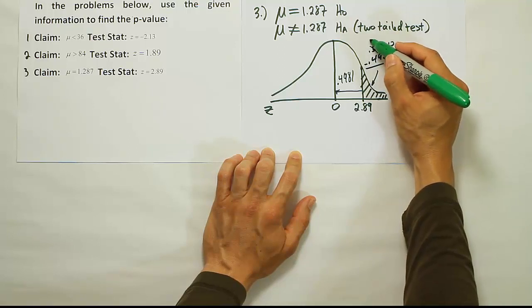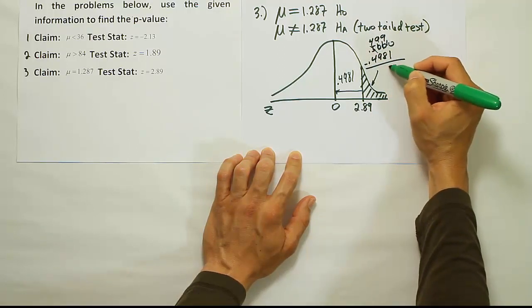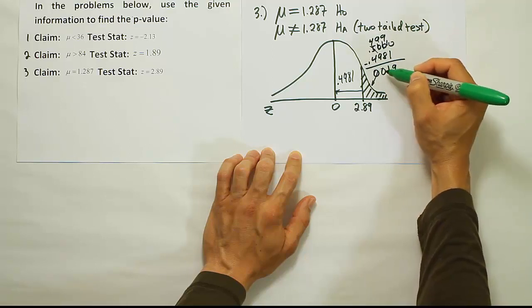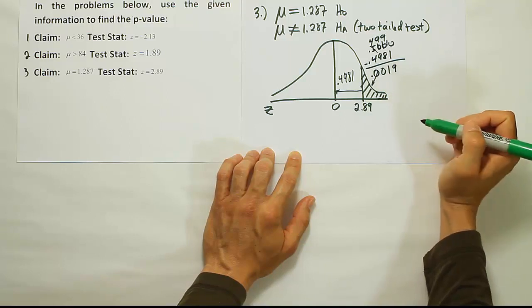All right, when you do the subtraction, a little old-school borrowing again, right? We get 9100. So we end up with the answer for the tail area to be 0.0019.